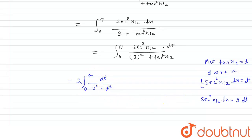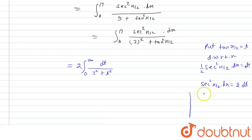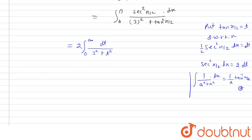And we know that 1 upon a square plus x square and integral of this function is 1 upon a tan inverse x upon a plus c. So from here we get 2 multiplied by 1 upon a that is 1 by 3, tan inverse t upon 3 from 0 to infinite.